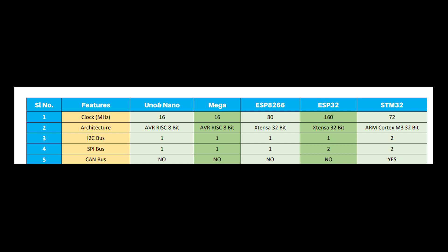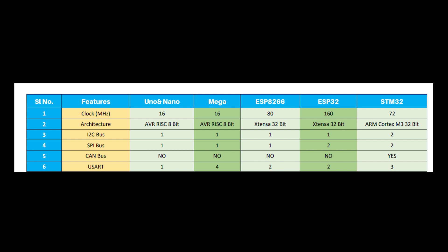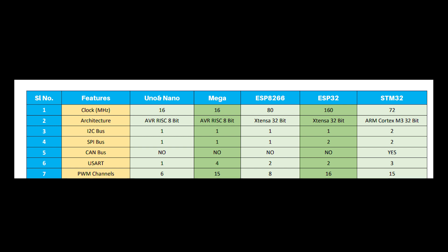Only the STM32 has CAN bus communication capability in this comparison. For UART communication: Uno and Nano have a single UART channel, Mega has four UART channels, ESP8266 and ESP32 have two UART channels, and STM32 has three UART channels.